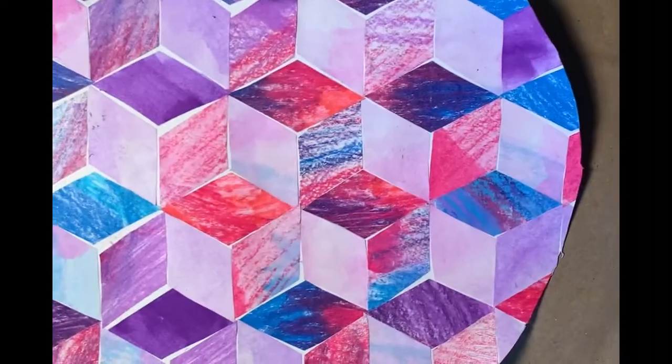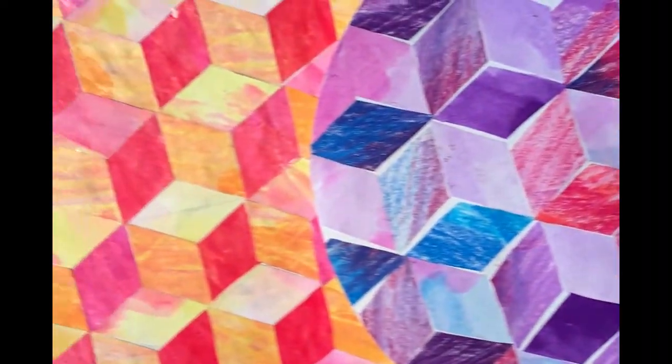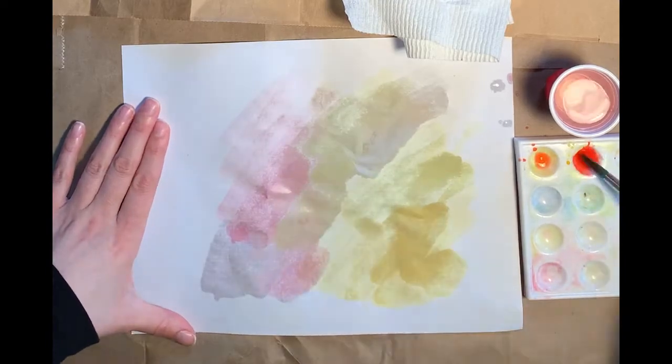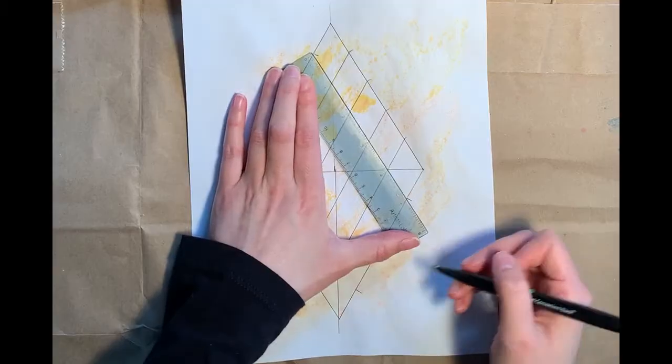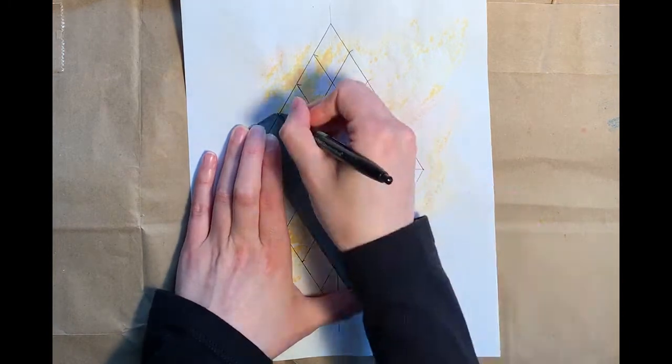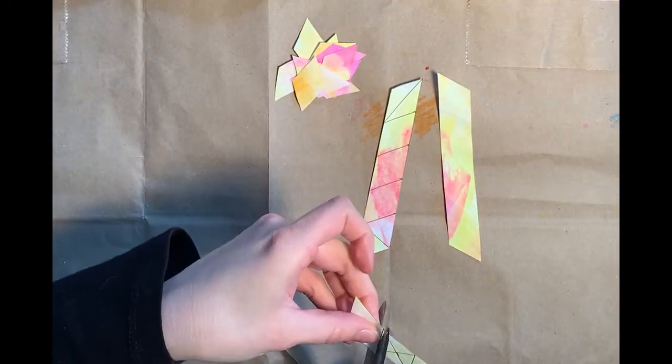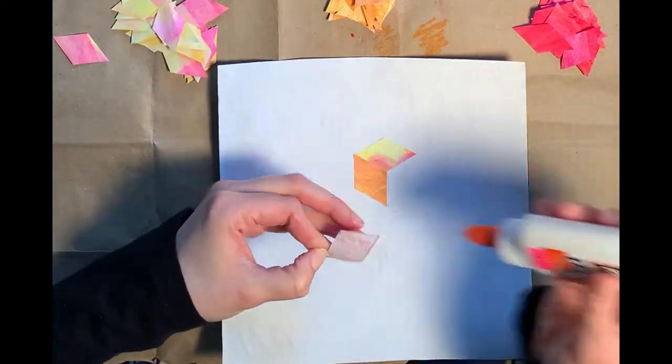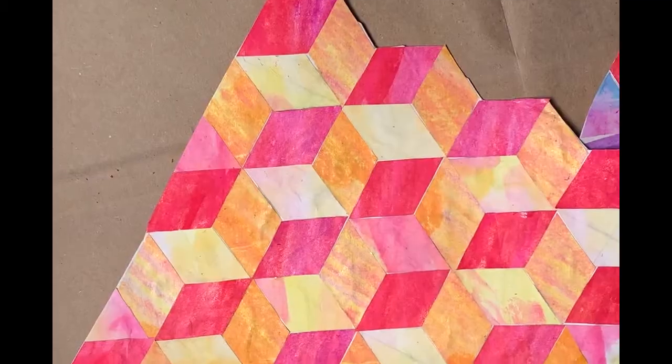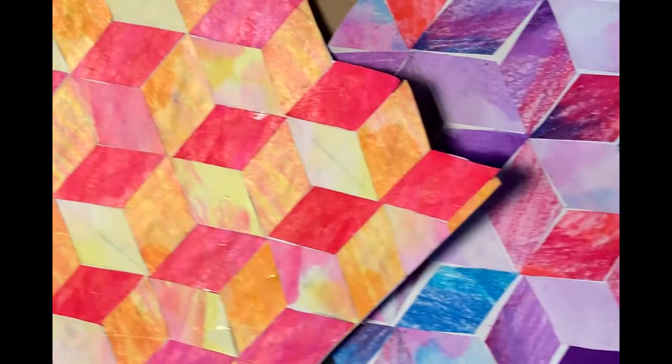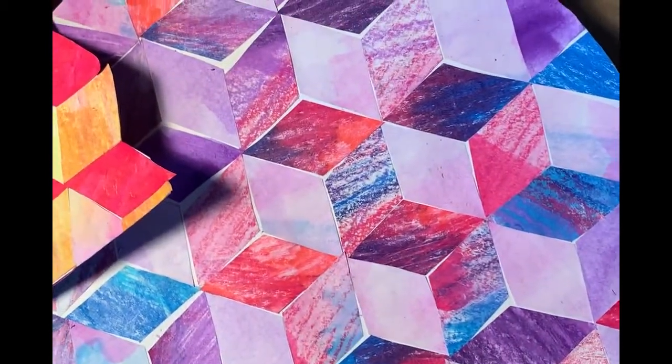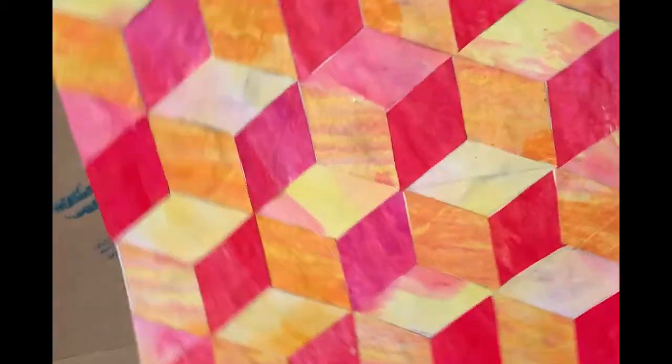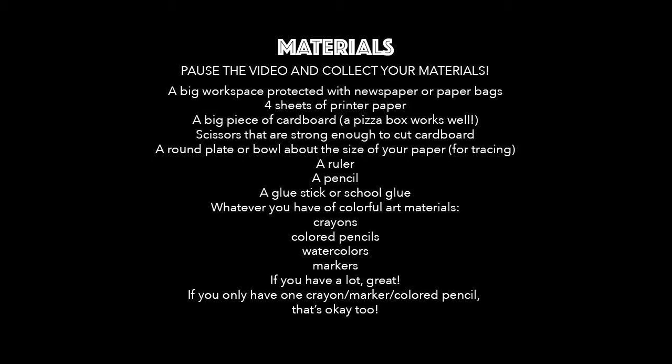To make our tessellations, we're going to completely color in three sheets of paper, draw and cut out rhombus tiles, and then we're going to arrange and glue those tiles down in our tessellation formation. Now this may seem like a lot and it's overwhelming, but don't worry, I'm going to walk you through every single step. Are you ready? So pause this video, grab your materials, and meet me back here.